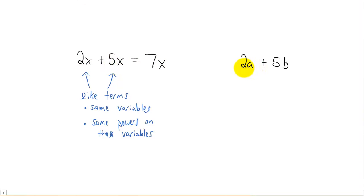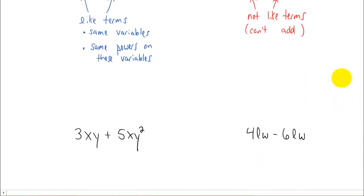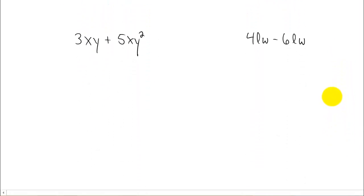So just as another example, if you had something like 2a and 5b, these are not like terms. So we're not allowed to add these two terms together into one term. To give you a couple more examples, let's look at this one.